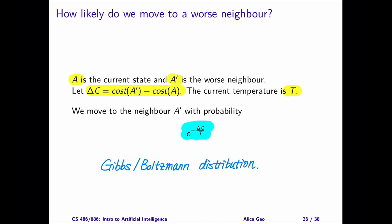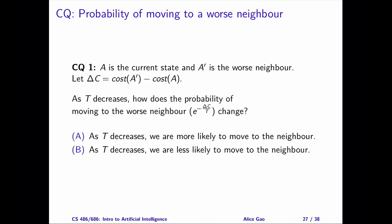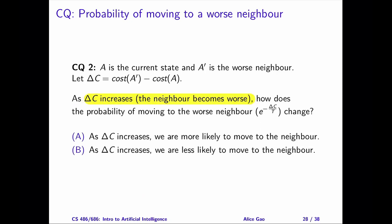Let's work on two questions, which will help us understand how the probability depends on the current temperature and the cost difference. Question number one. If the temperature decreases, how does the probability change? Question number two. If delta C increases, in other words, the neighbor becomes worse, how does the probability change?